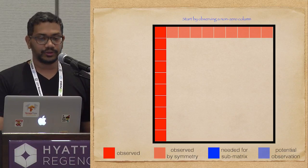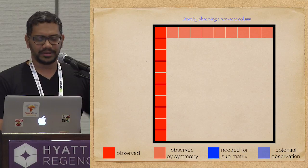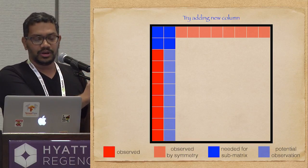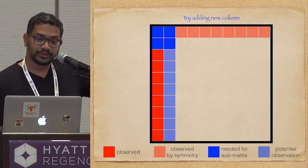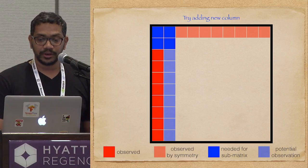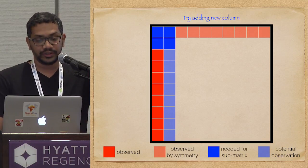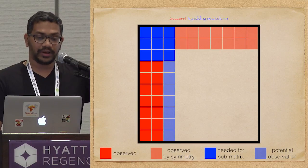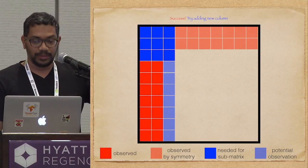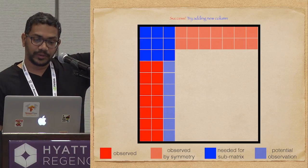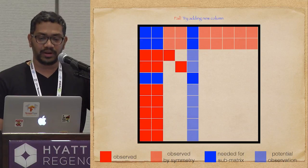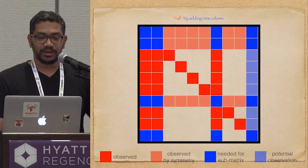That's the basis of the algorithm. It's very simple: start by observing the first column (assuming it's non-zero). Check if the second column is independent of the first by checking if the 2×2 principal submatrix is full rank. If it is, add that column — query the entire column. Then check if the third column is independent of the first two by looking at the 3×3 principal submatrix; if not, ignore it and don't query any more entries from that column. Repeat this procedure until you run out of columns.